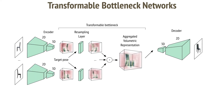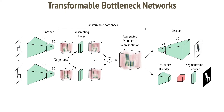By simply averaging the feature volumes extracted from multiple viewpoints, we can improve the quality of the synthesized result in the case of large viewpoint transformations. We also use segmentation masks to train a separate network branch to perform occupancy detection for each cell in the extracted feature volume. This makes the extracted volume more structurally coherent and meaningful, enabling us to reconstruct the 3D structure from the input image.